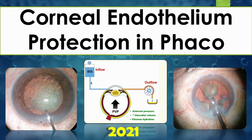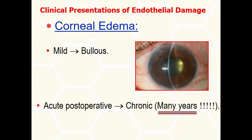With patients electing to have cataract and refractive lens exchange at increasingly younger ages, protecting the endothelial cell layer at all times is essential. Clinically, endothelial cell damage presents as early post-operative corneal edema ranging from mild to bullous keratopathy.